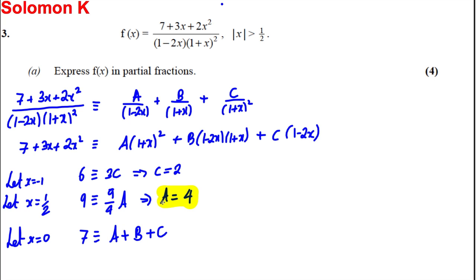We have A is 4 and C is 2. So we need to find B now. Substituting those in, 7 equals 4 plus B plus 2, so 6 plus B. Therefore B equals 1.